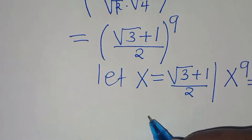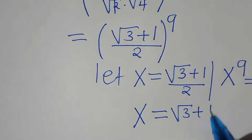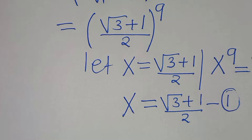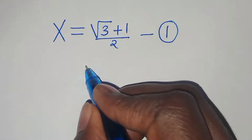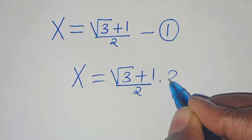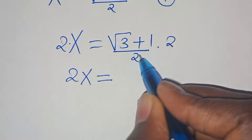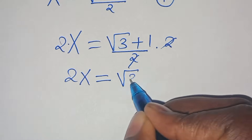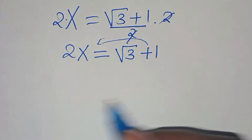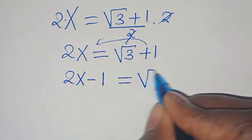We have x equal to square root of 3 plus 1 divided by 2. Let's call this Equation 1. Multiplying both sides by 2 gives 2x equals square root of 3 plus 1. Taking 1 to the left-hand side gives 2x minus 1 equals square root of 3.